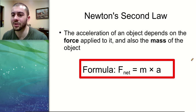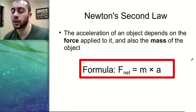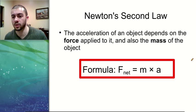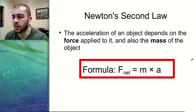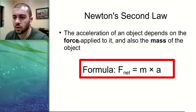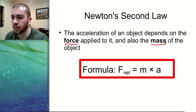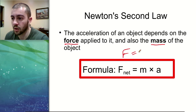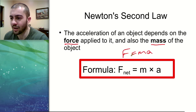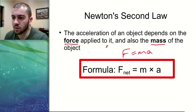In this video we're going to talk about Newton's second law and how we can use it to calculate information about motion involving forces and acceleration. What Newton's second law states is that the acceleration of an object depends on the force that we apply to it, as well as the mass of an object. The classic Newton's second law formula is F equals MA, and you'll always use F equals MA in a ton of different applications.